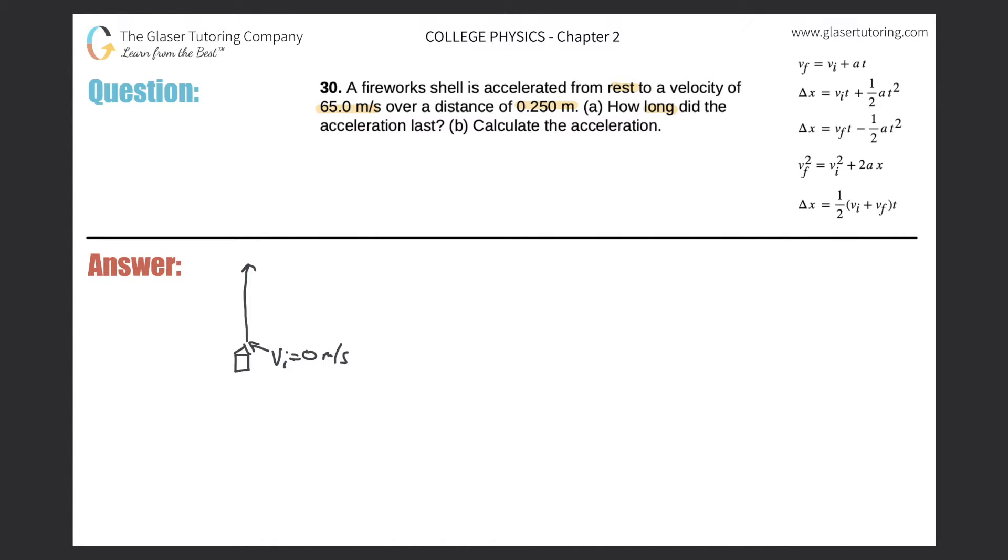It says it goes from rest to a velocity of 65.0, so I know that the point up here must be the final velocity, and that's going to be 65.0 meters per second. And it covers a distance, so this total distance it covers is going to be 0.250 meters.